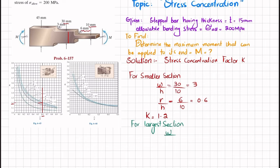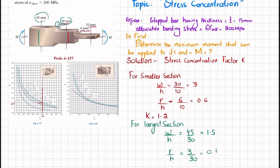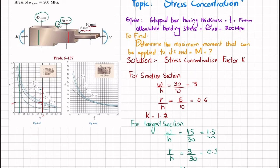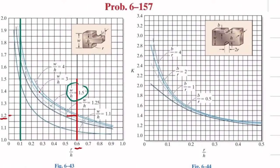For the larger section, W is 45 mm and H is 30 mm, so W/H = 45/30 = 1.5. The fillet radius R is 3 mm, so R/H = 3/30 = 0.1. We will now find the K value for the larger section using the chart at R/H = 0.1 and W/H = 1.5.